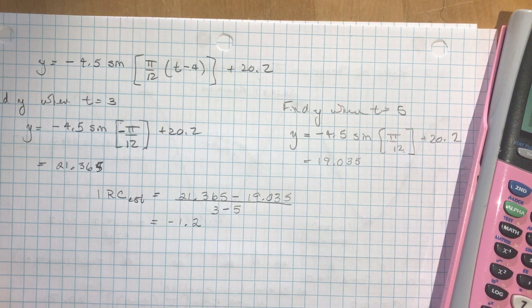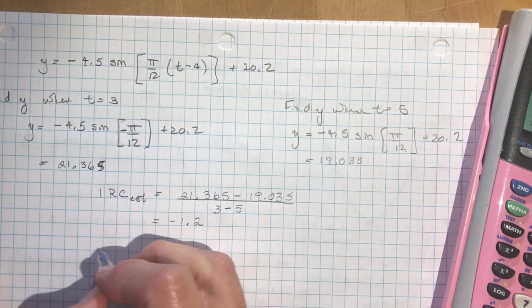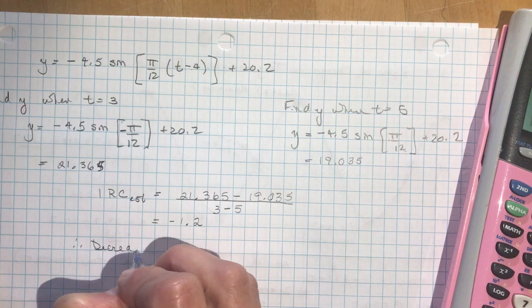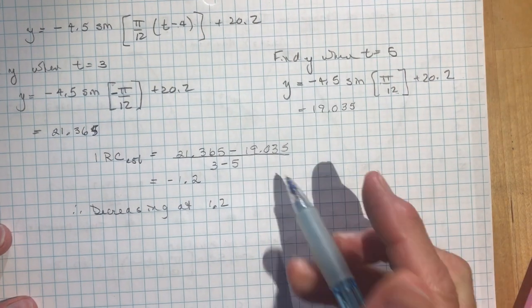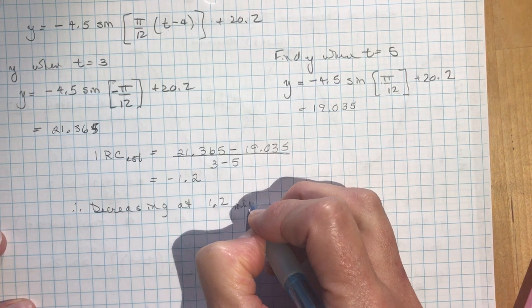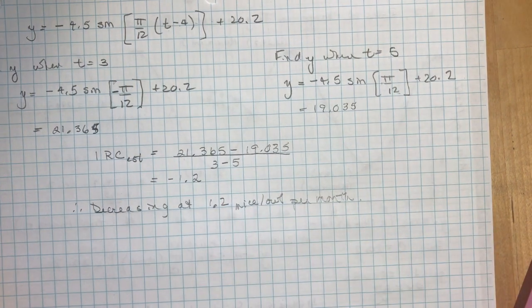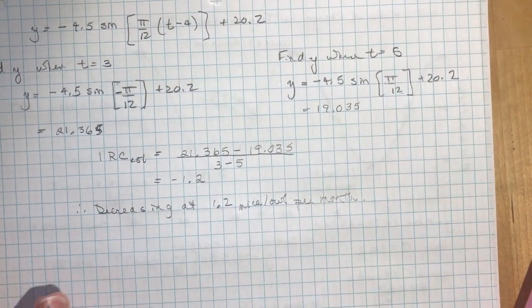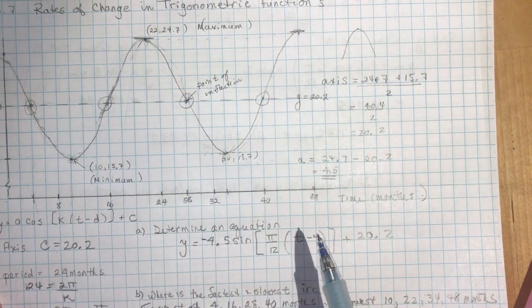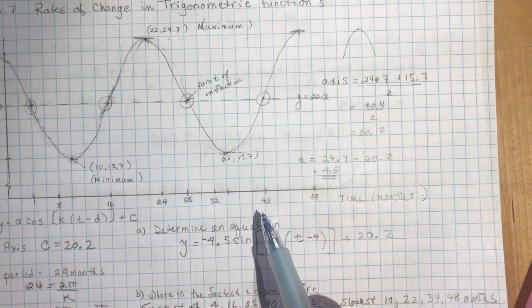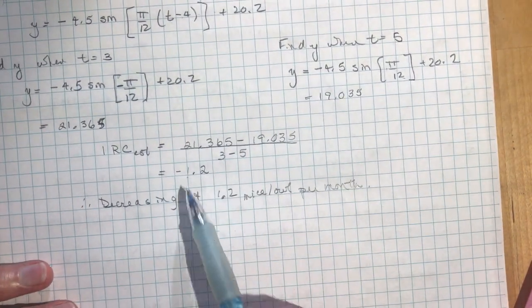So that means that it's decreasing, right, decreasing at 1.2, you don't say decreasing negatively, that's just like a double negative, 1.2 mice per hour per month, don't forget units, so now if you did the same calculation on the other side of our graph, let's say we said the fastest, the fastest is going to be here, so it should be increasing at the same rate, because this is the steepest point on this function, so if you did 16, if you did 15 and 17, you should get the very same calculation, except it's going to be positive.